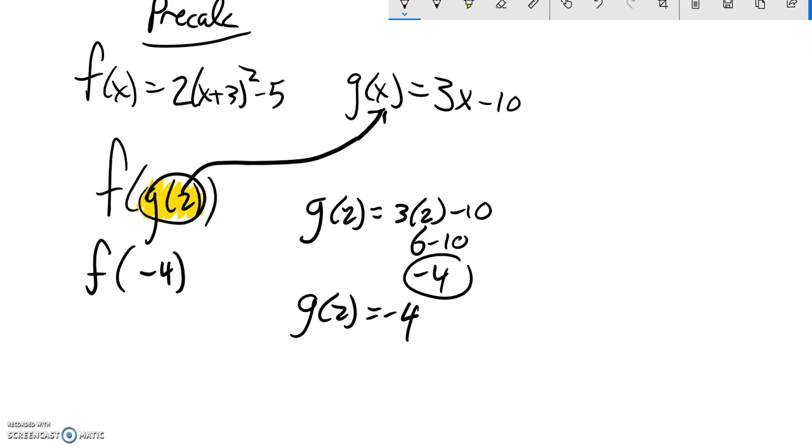So now f of negative 4, plug a negative 4 into here, 2 times negative 4 plus 3, that quantity squared minus 5. This is a negative 1, 2 times negative 1 squared minus 5. Negative 1 squared is positive 1, 2 times 1 minus 5. 2 minus 5 is negative 3.